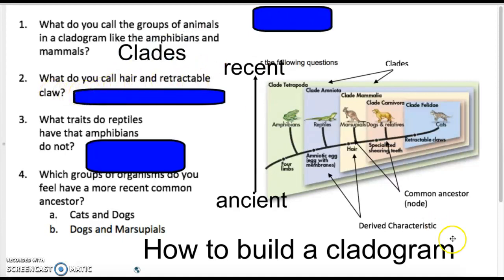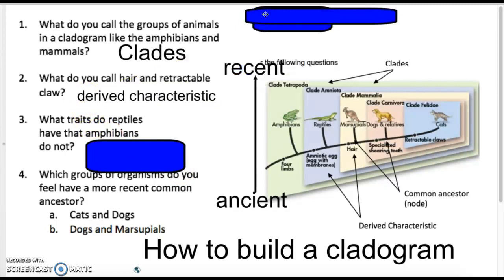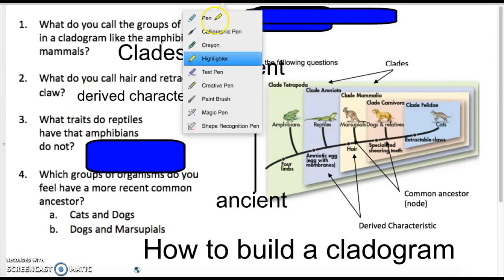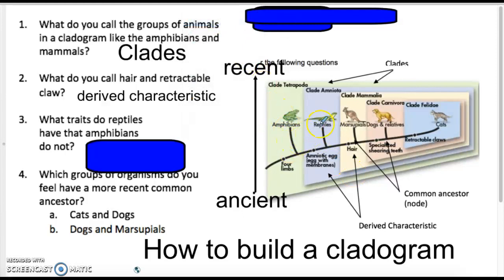What do you call the hair and retractable claws? We call them derived characteristics. When you look at the derived characteristics, we're trying to look at what defines the certain clade versus the other clade. If you look at amphibians, it says, what traits do reptiles have that amphibians do not?